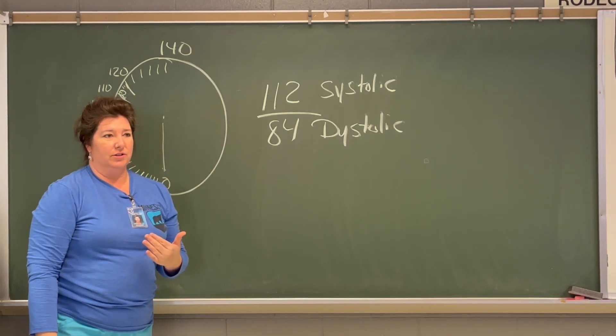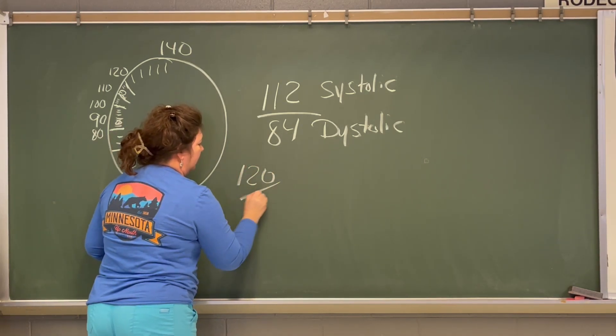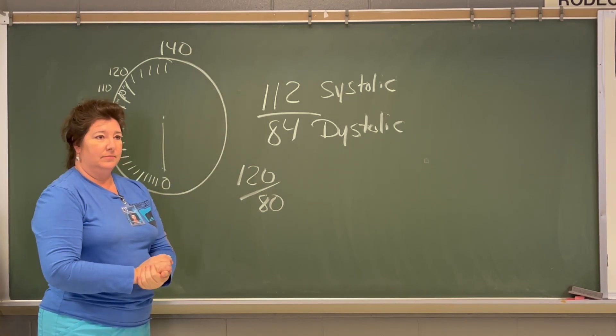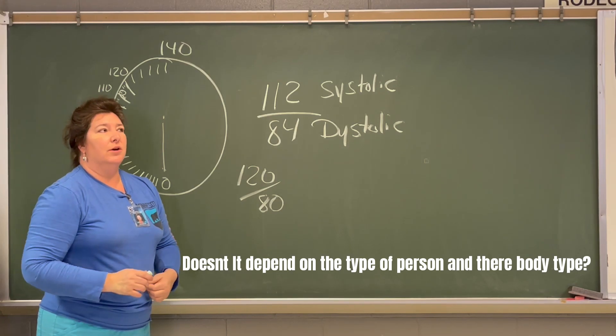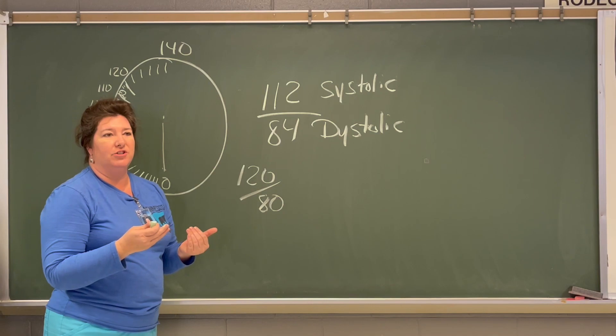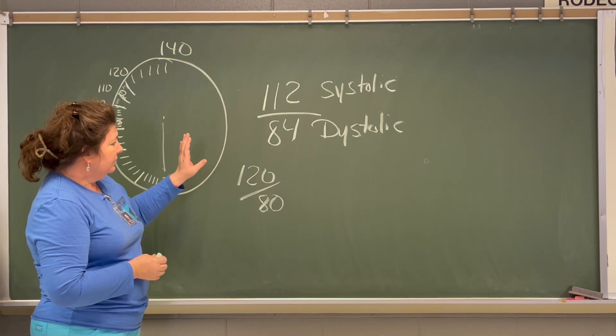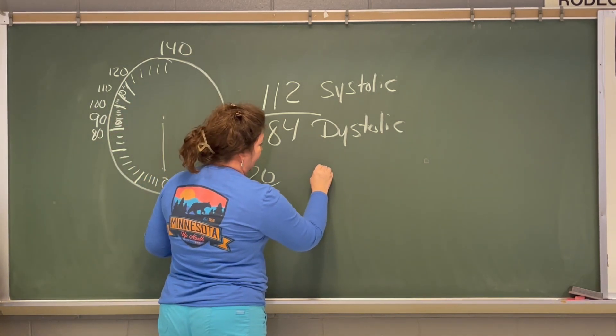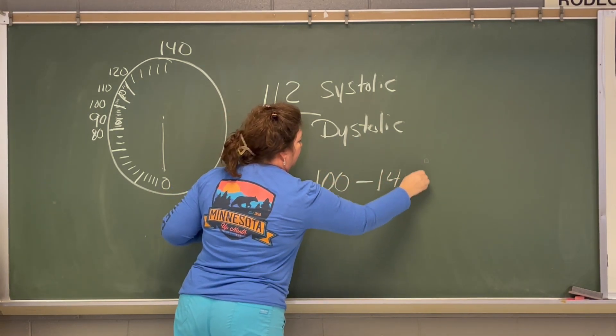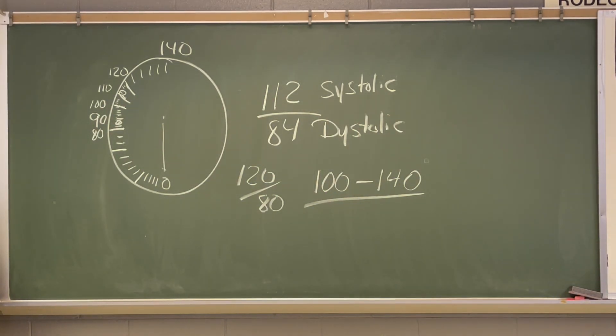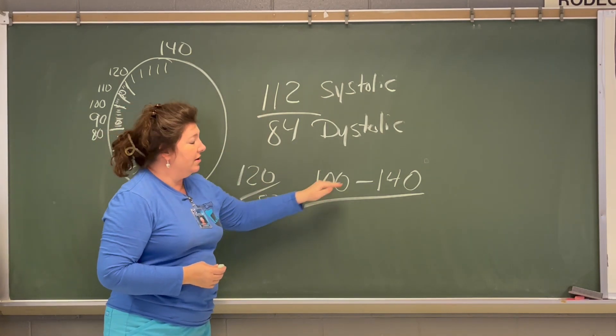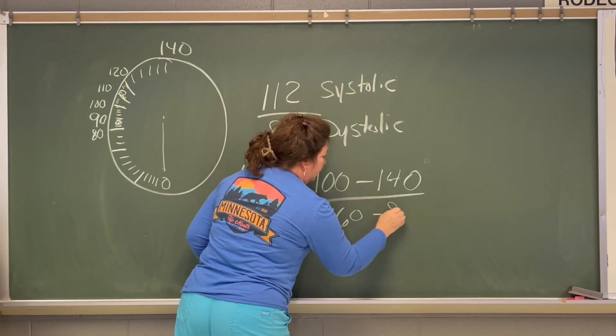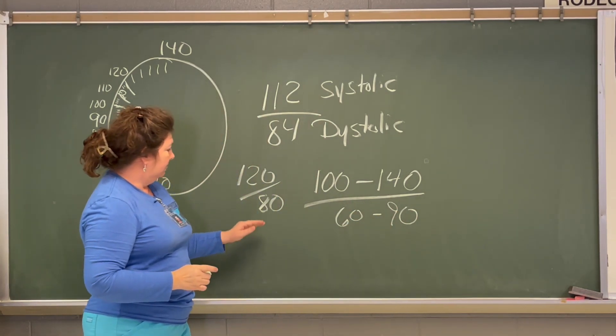Okay. So, this is your systolic and this is your diastolic. Now, the normal blood pressure is 120 over 80. But this is your patient's actual blood pressure. Is this too high or too low? Okay. So, before I had kids, my typical blood pressure was 90 over 60, which is low. In order to know whether or not this is okay, you would have to know the range.